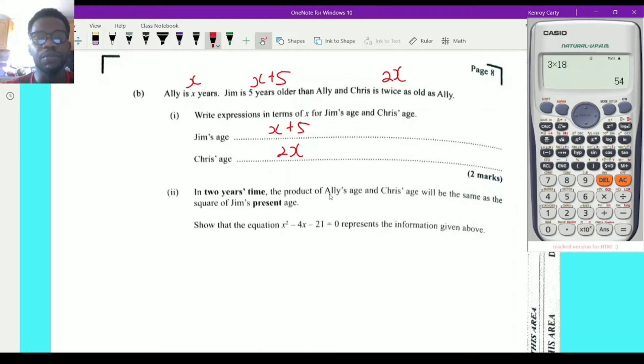In two years' time, the product of Ali's age and Chris's age will be the same as the square of Jim's present age. Now, in two years' time, Ali's age, so that's the first question you need to ask yourself. In two years' time, Ali is going to be two years older. Now remember that Ali was initially x. So in two years, two years is going to add on to his age or her age. Chris's age is also going to be increased by two. So Chris was 2x. In two years' time, Chris would be 2x plus 2 will be the same as the square of Jim's present age. Now, Jim's present age is x plus 5. So I'm going to leave that alone.